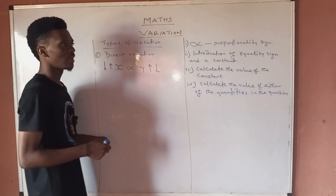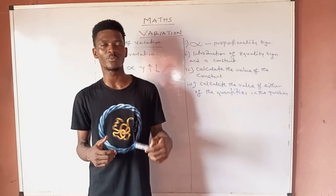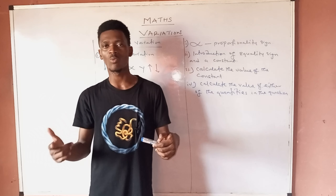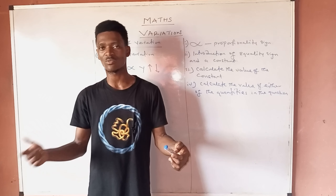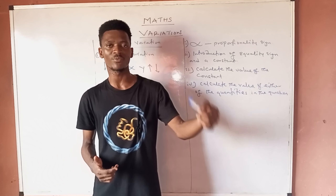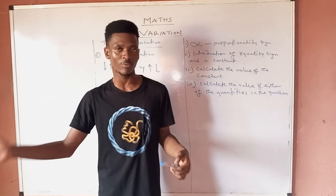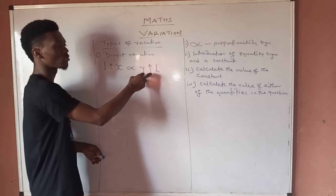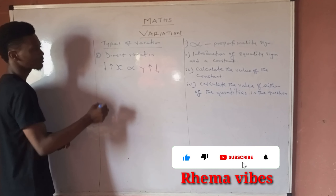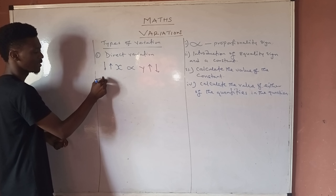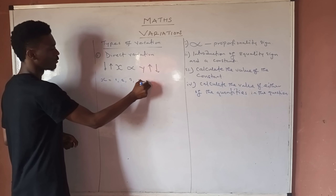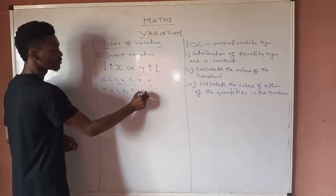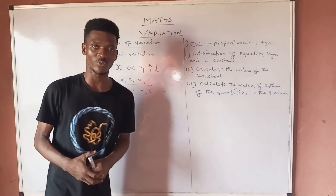So if your x values are 1, 2, 3, 4, 5 — those values are increasing — then your corresponding y values should also be increasing: 1, 2, 3, 4, 5. That's what direct variation entails. When there is a decrease in x, there should also be a corresponding decrease in the values of y.